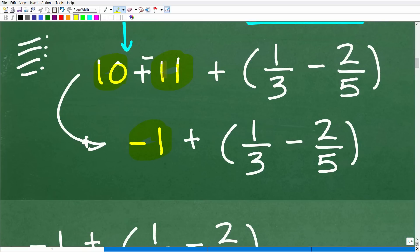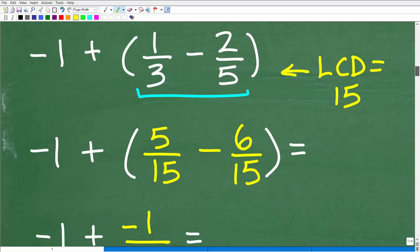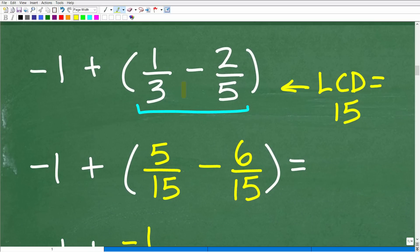So 10 minus 11 is the same thing as 10 plus negative 11. That's negative 1. So now what we need to do is figure out what 1 third minus 2 fifths is equal to. So we get to deal with fractions now. All right, so here, anytime you're trying to add or subtract fractions, you have to have those denominators the same. And you can see we do not have common denominators, so we have to find the common denominators. And again, this is going to be 15. The lowest common denominator is 15.